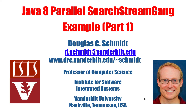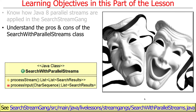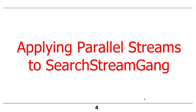What we're going to cover here is using the parallel streams approach to improve the performance of the search stream game. We had run the sequential version before and it took a certain amount of time. Now we're going to talk about the parallel streams version, which is going to take much lower time to run. Then I'll talk about the pros and cons of this approach.